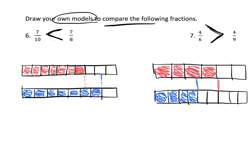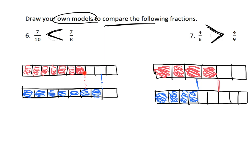Parents and teachers, students are going to begin to recognize that if the denominator is big, the pieces are going to be small, and if the denominator is small, the pieces are going to be bigger. So sixths are bigger than ninths — 4 sixths is bigger than 4 ninths. And tenths are smaller than eighths because you cut into more pieces. So 7 tenths gives you 7 small pieces, while 7 eighths gives you 7 bigger pieces. This is the logic students are developing.